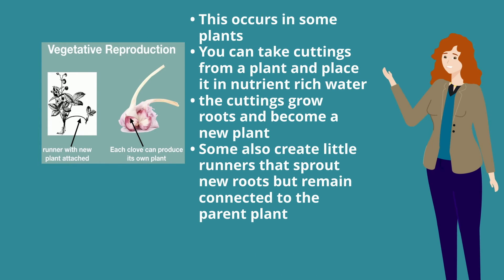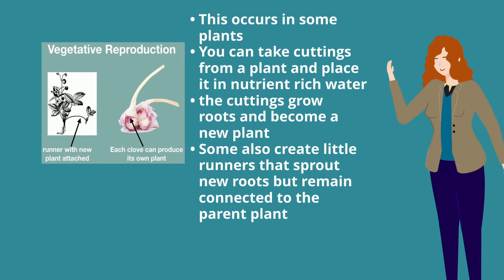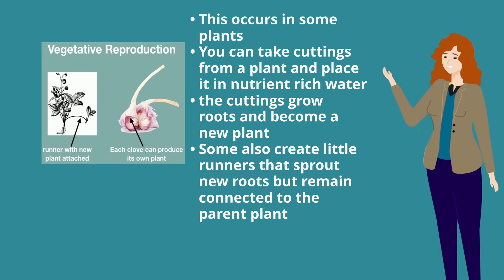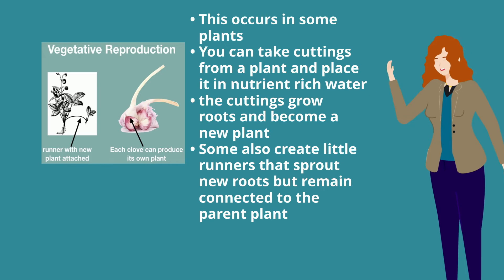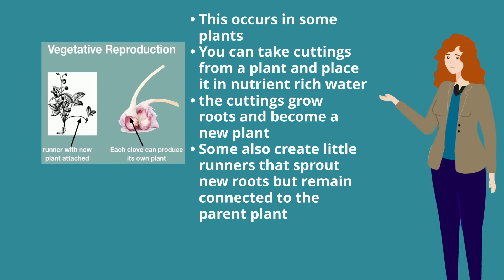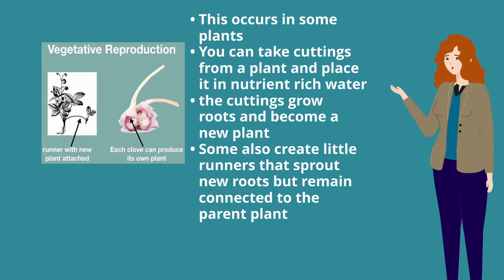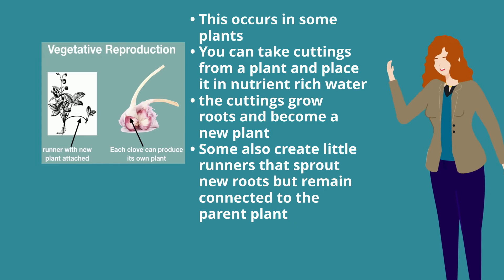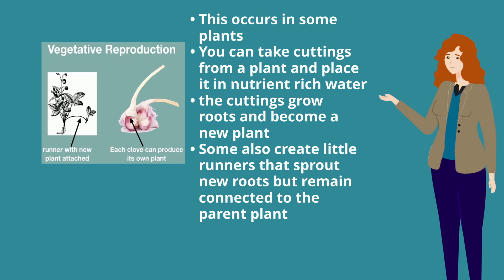In vegetative reproduction, it can occur in some plants. You can take cuttings from a plant and place it in nutrient-rich water. The cuttings grow roots and become a new plant. Some also create little runners that sprout new roots but remain connected to the parent plant.